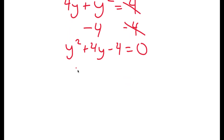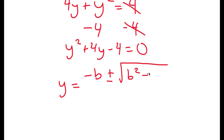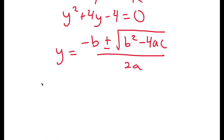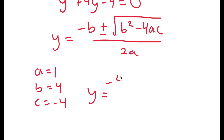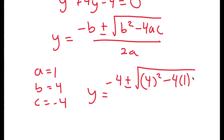Now from here, to solve for the exact value of y, I can use the quadratic formula, which is negative b plus or minus the square root of b squared minus 4ac all over 2a. So in this case, a is 1, b is 4, and c is negative 4. So I get y equals negative 4 plus or minus the square root of 4 squared minus 4 times 1 times negative 4, all over 2 times 1.